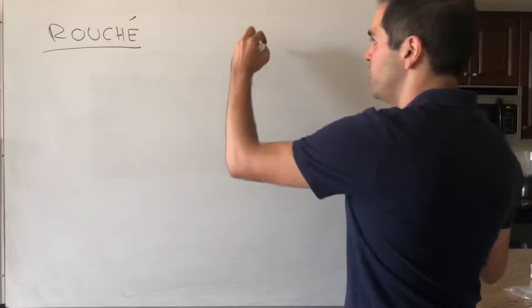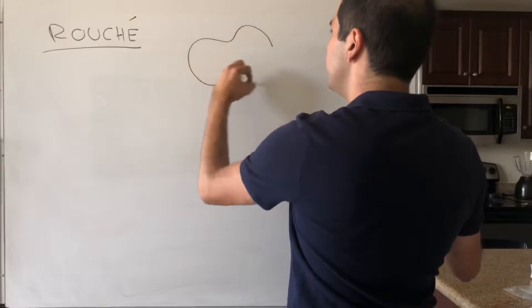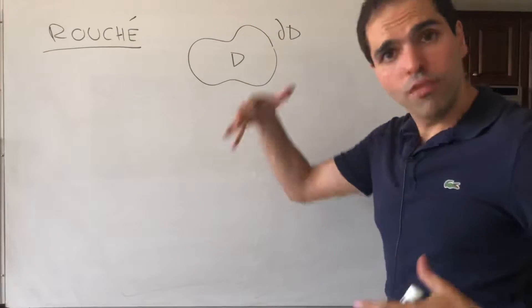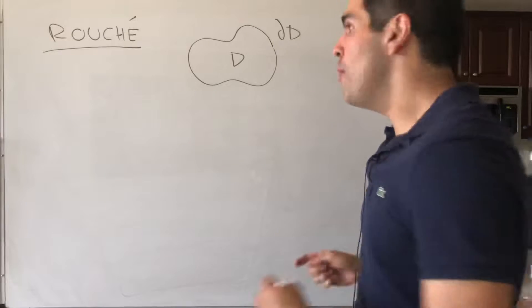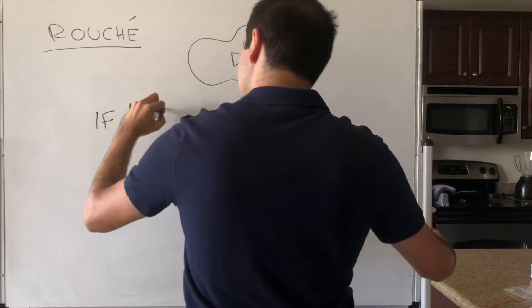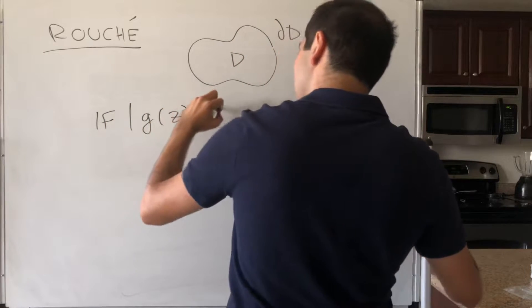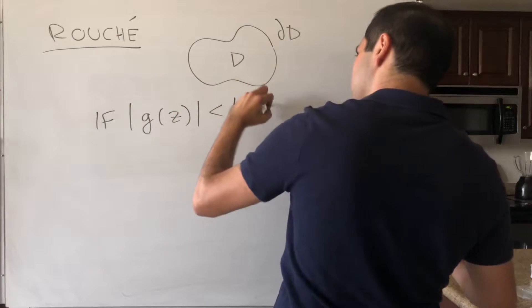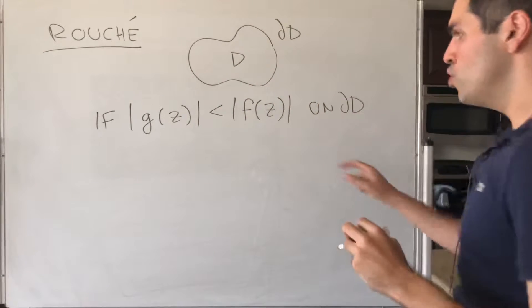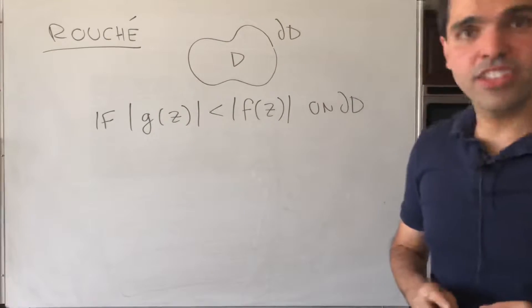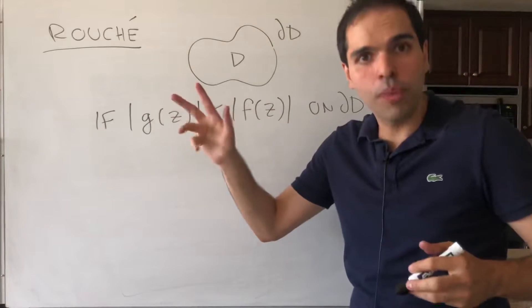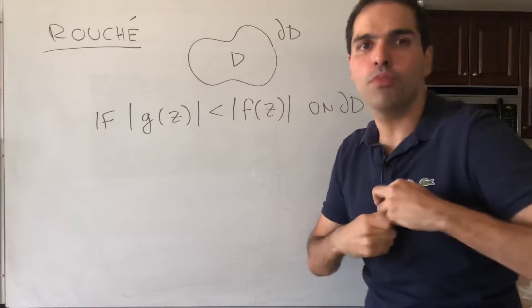Okay, so what does Rouche say? Suppose you have a region D with a certain boundary, and suppose you have a function that dominates another function in the following sense. Suppose |g(z)| < |f(z)| on the boundary. So suppose F dominates G, then what this says is you can perturb F a little bit and still have the same number of roots.